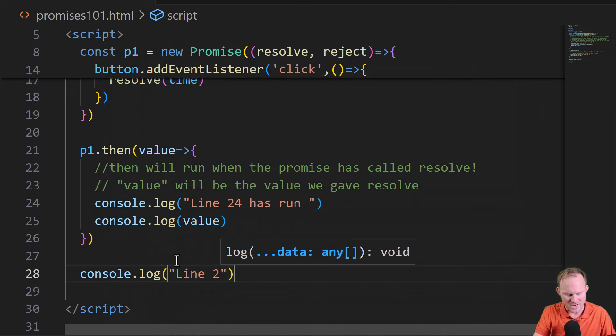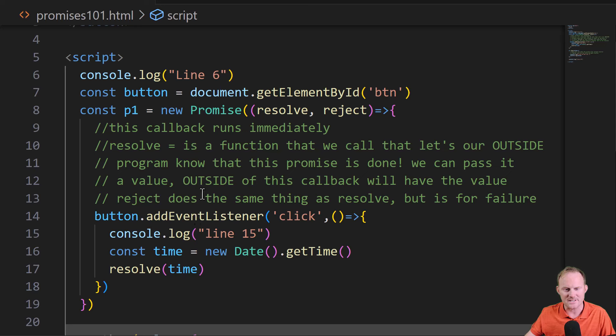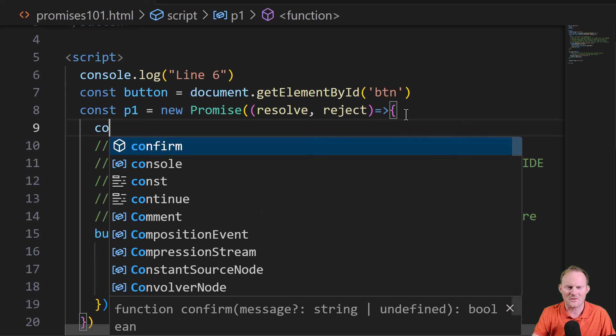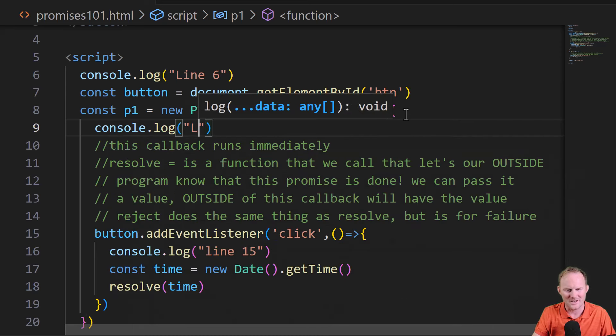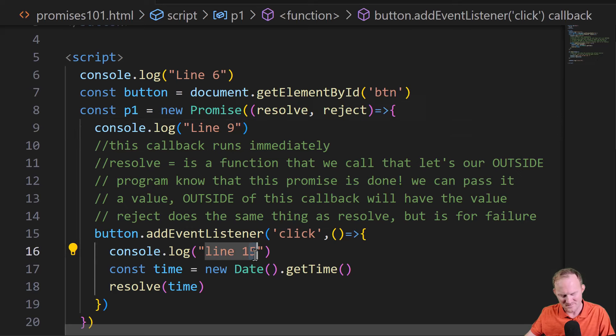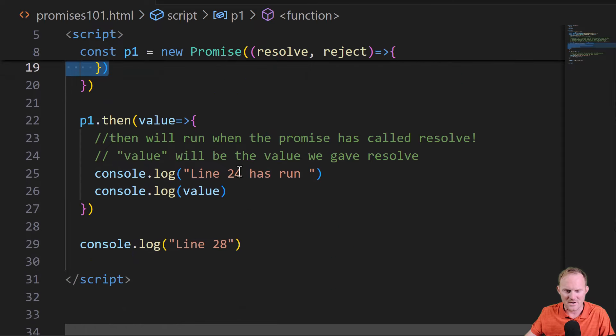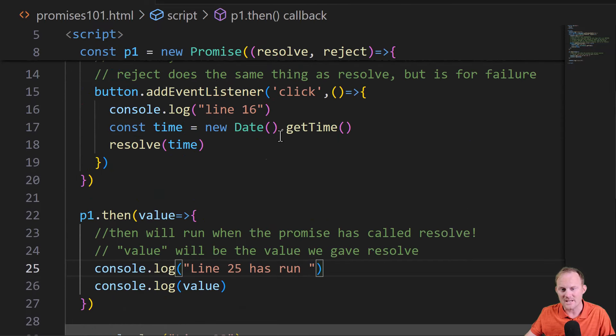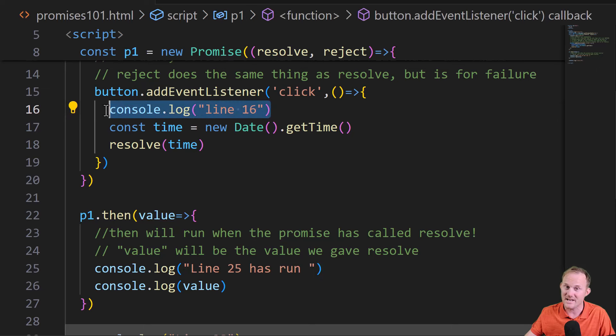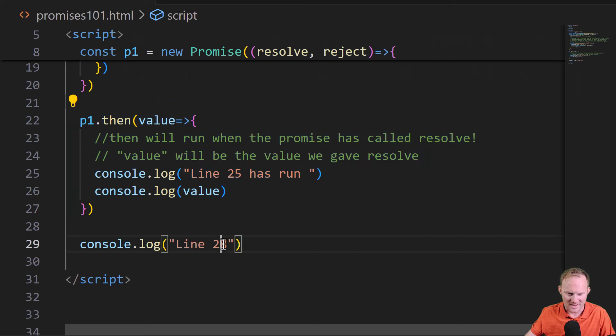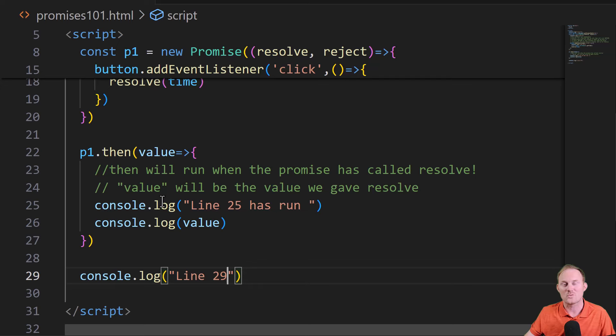At the bottom, I'll put console.log, line 28, just so that we can see the progression. It's gonna go line six. Let's put one in here. It's gonna goof up all of our lines. Console.log, line nine, just so that we can see this thing runs immediately. I'm gonna have to update these. Line 16 is not gonna run until we click, come down here. Line 25 is not going to run until we have clicked right after 16, because when resolve runs, the then will run. Line 29, that will run immediately because these callbacks will have to wait their turn.